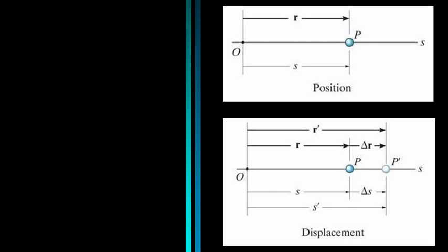Let's move into section 12.2, rectilinear kinematics continuous motion. First, definitions: a particle P travels along a straight-line path defined by the coordinate axis s. The position of the particle at any instance relative to the origin is defined by the vector r, or the scalar s. Typical units are feet and meters.